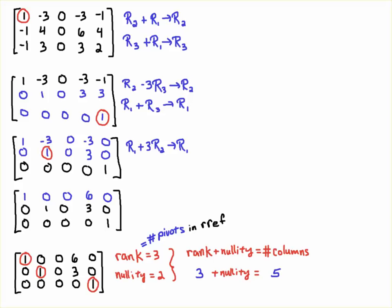And so now we have a matrix that is in row reduced echelon form. So I'm just going to rewrite that matrix and I'm going to circle the pivots and you see that we have 1, 2, 3 pivots. Remember that the rank of a matrix is the number of pivots when it's in RREF.